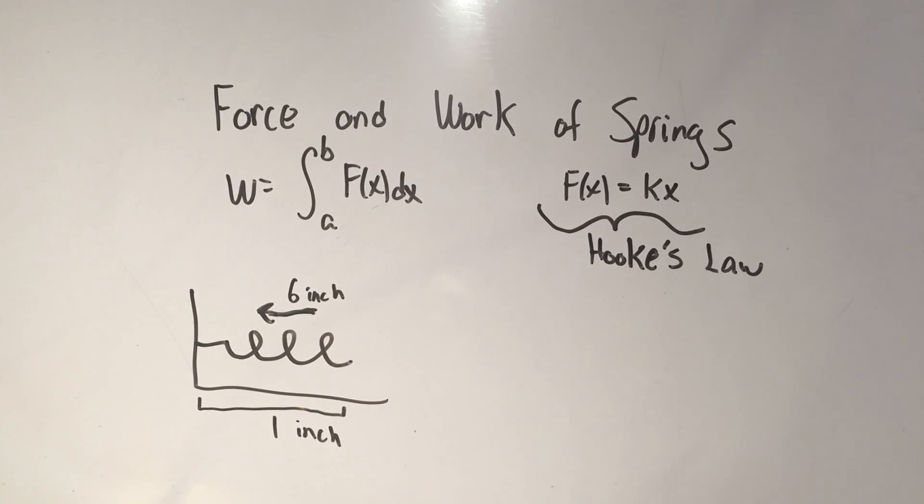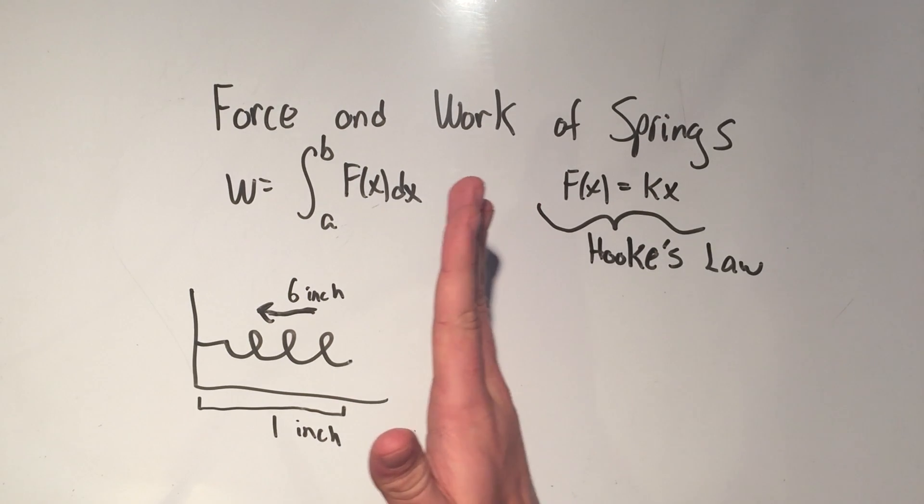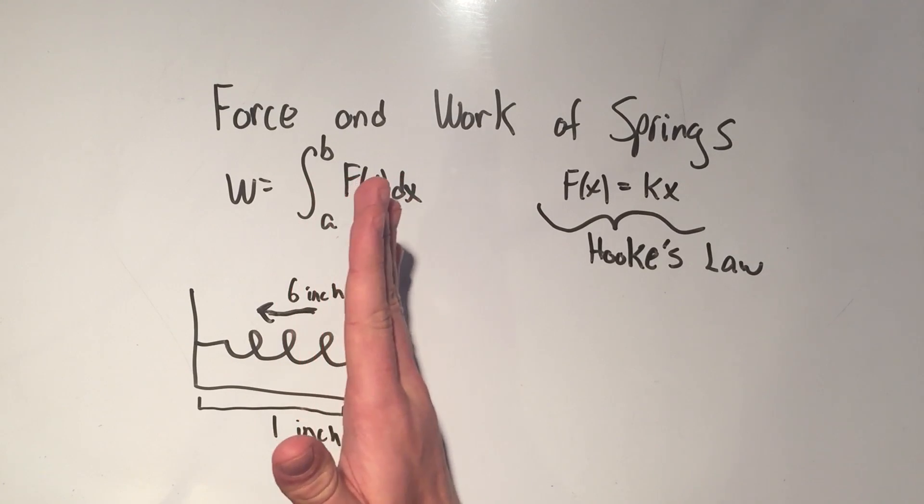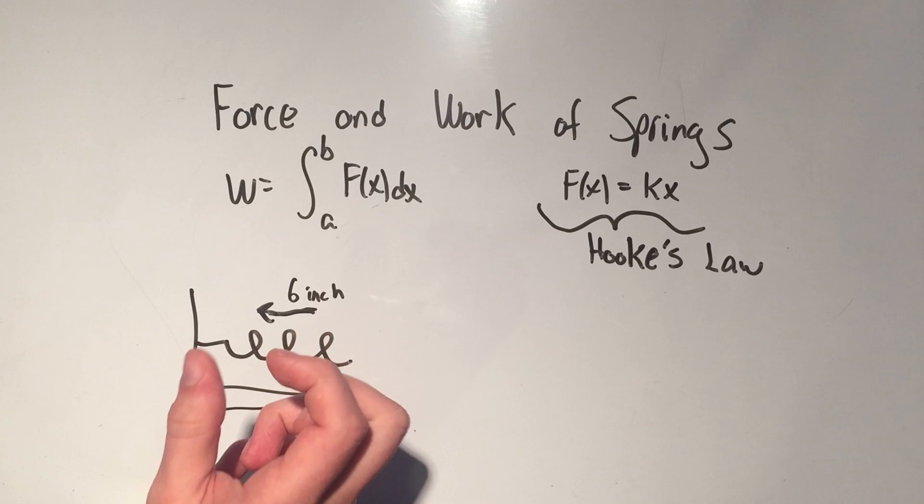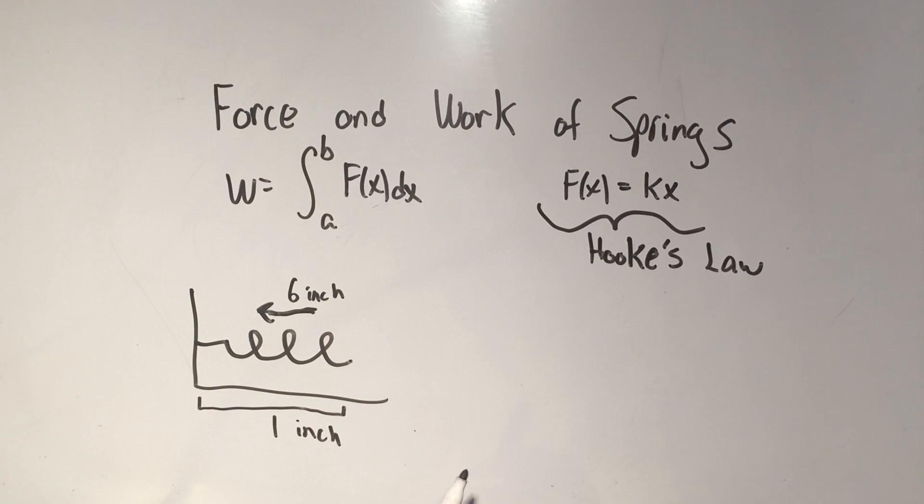So the problem I have here for you is that we've got this spring, a nice spring attached to a wall. Maybe it's stopping a door. But the problem says that if this spring is naturally 1 inch, and if I press the spring in 6 inches, so basically I'm reducing the spring by half, that requires 10 pounds of force.